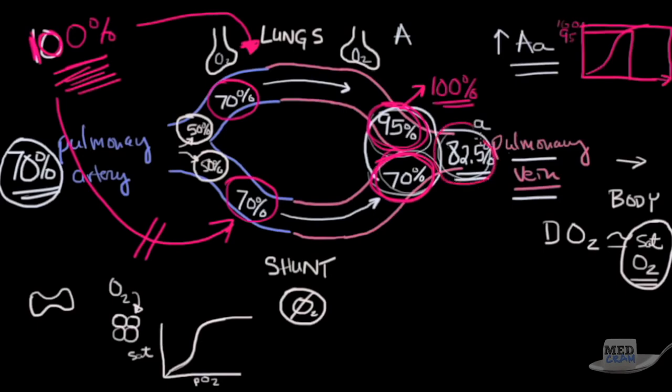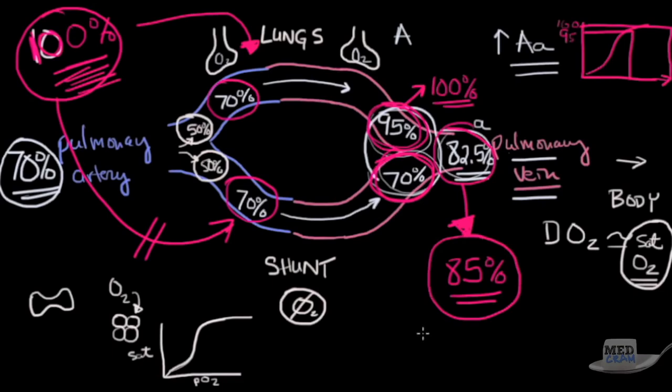But because this area here never got to see the 100% oxygen, because by definition it is a shunt, we still have 70% in this limb. Instead of having 82.5% saturation, the new saturation is going to be only 85%. This is different in response to high altitude, diffusion, hypoventilation, and VQ mismatch. This is a very important point: 100% oxygen treatment in these type of hypoxemias do not really improve your hypoxemia. That's a clue that the mechanism of action here is a shunt.